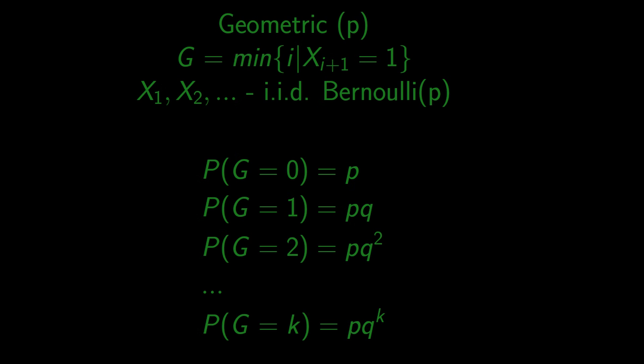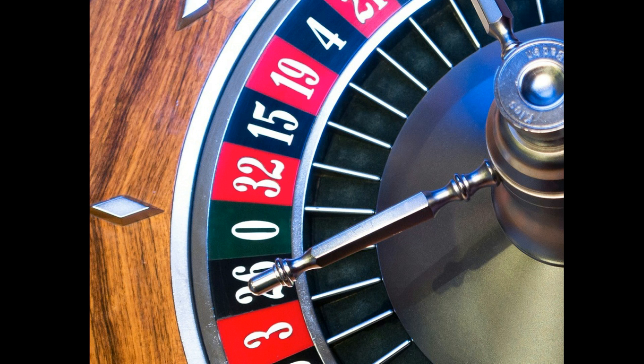To understand better the role of independence in this calculation, think about roulette players. Sometimes when they are betting on the red result, the outcome is black many times in a row. They tend to think that the probability of the next one being red is higher because you can't have that many blacks in a row.